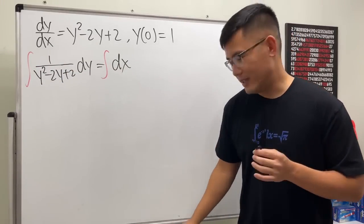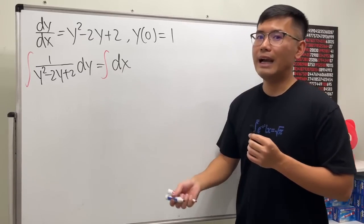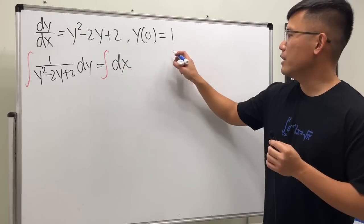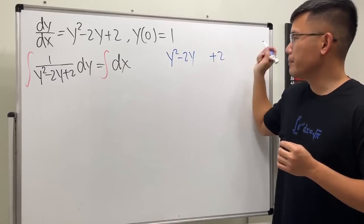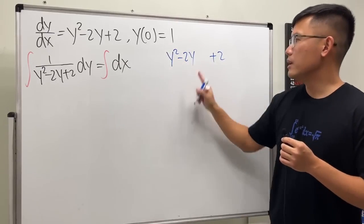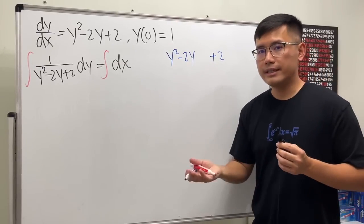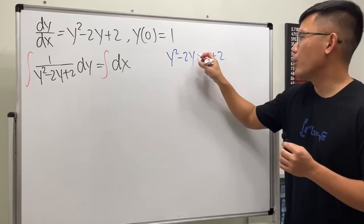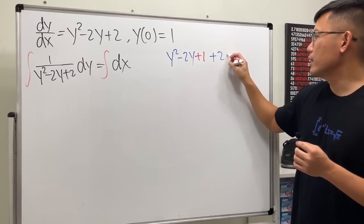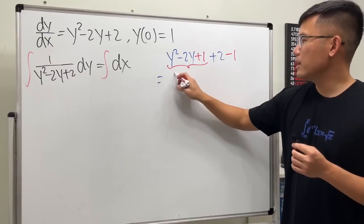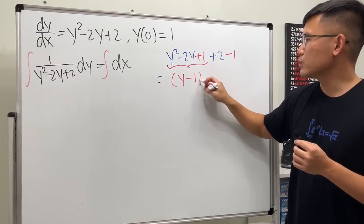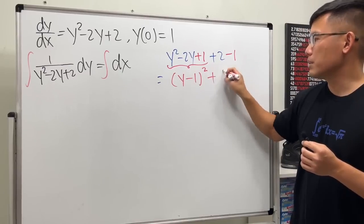How do we deal with this though? Can we factor it? Unfortunately not with real numbers, so we will have to complete the square. So here, y² - 2y, leave a space, and then +2. This is 1 already. I will take half of this, which is -1, and square that. I will get +1, but don't forget to minus 1 here. And we see these three terms give us a perfect square: (y - 1)² and this is of course just plus 1.